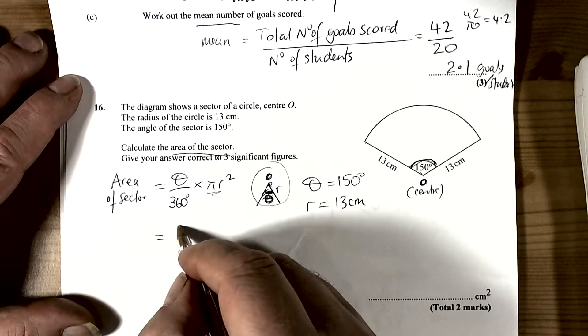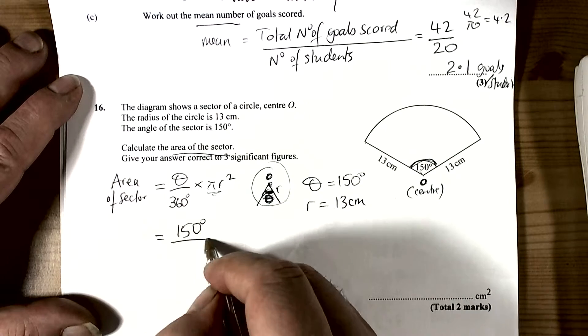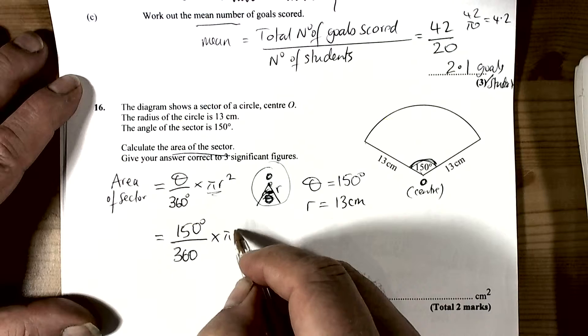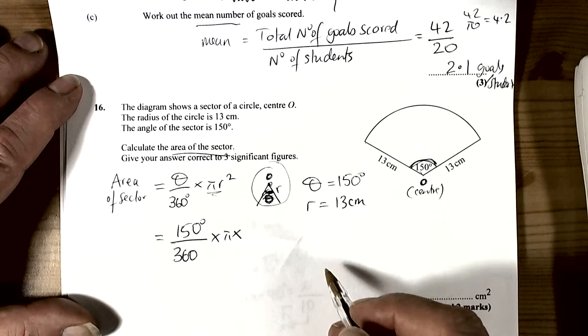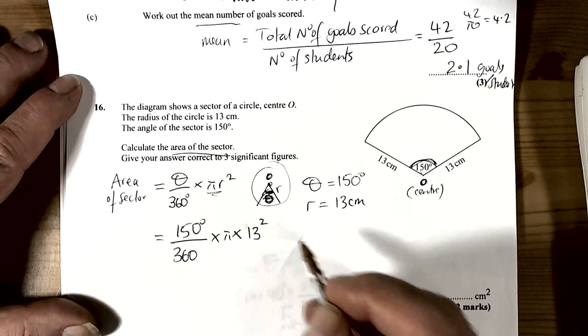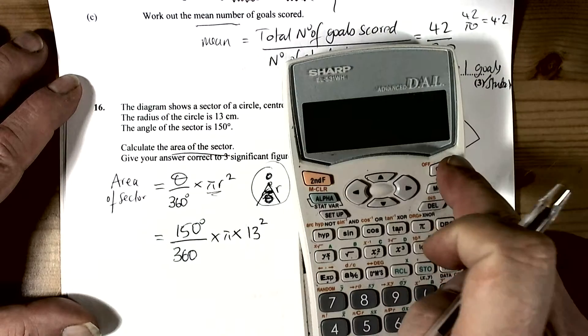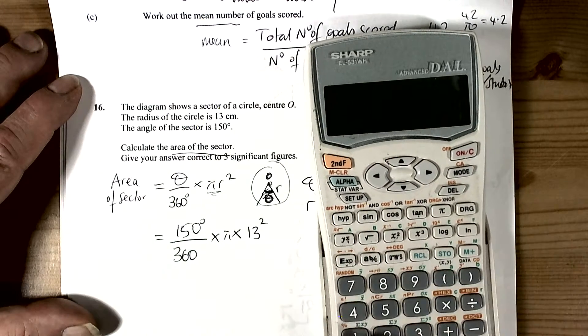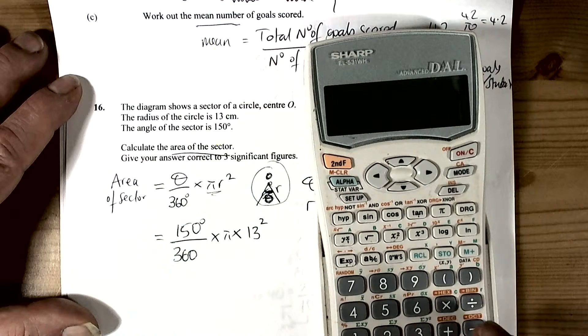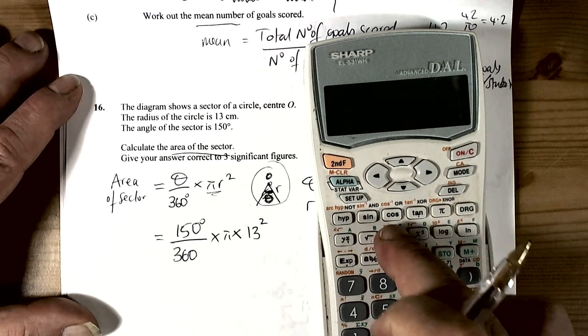So we follow the formula and put in the numbers we know: 150 divided by 360 times pi. Pi r squared means we're multiplying by the radius squared, so we put that in our calculator: 150 divided by 360, press equals, times by pi, press equals, times by 13 squared, press equals.